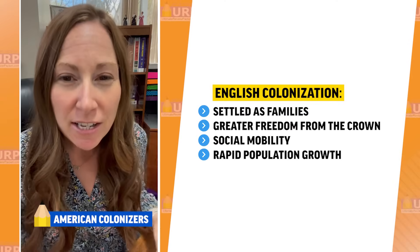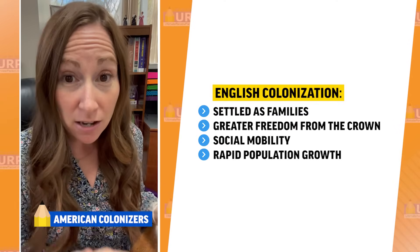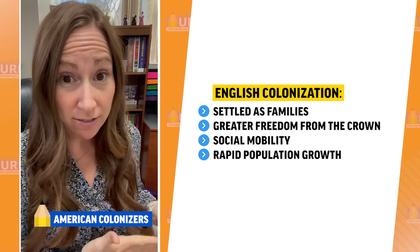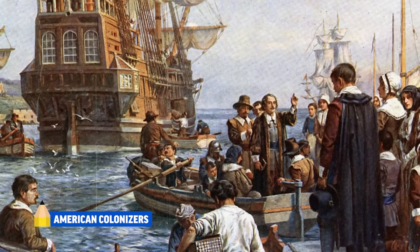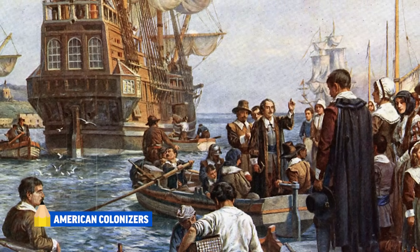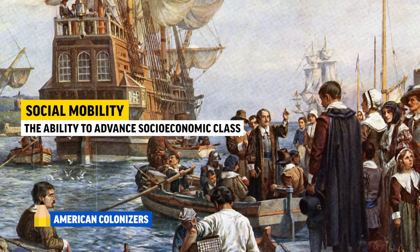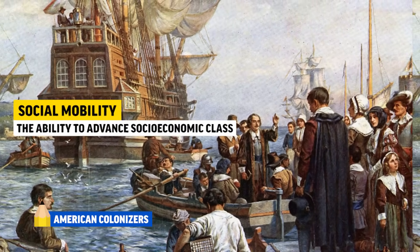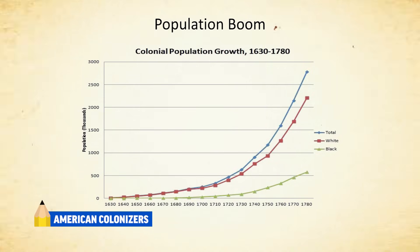Finally, the English settled in families and sought permanent settlements. The English enjoyed greater freedom from the crown, were religiously diverse, and had a great degree of social mobility. The English population also grew quickly, which caused conflict with Native Americans.